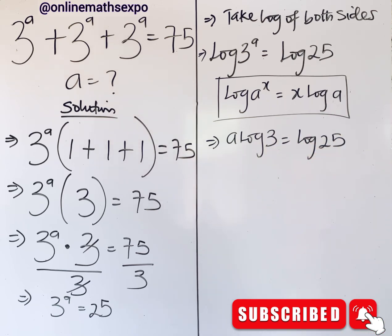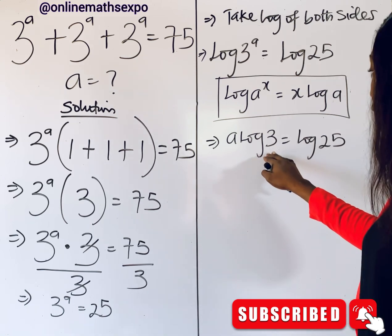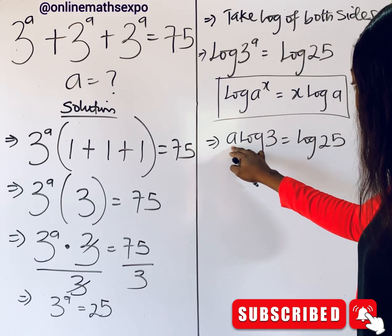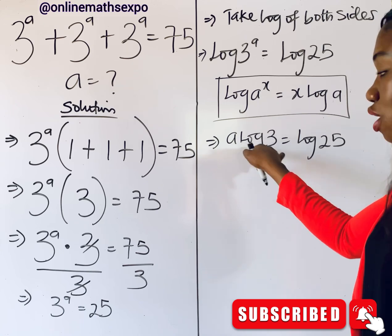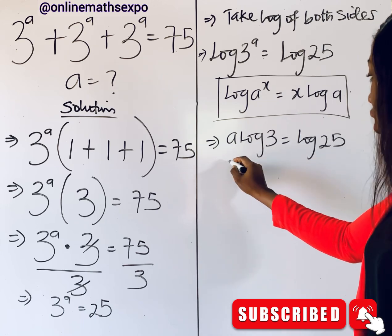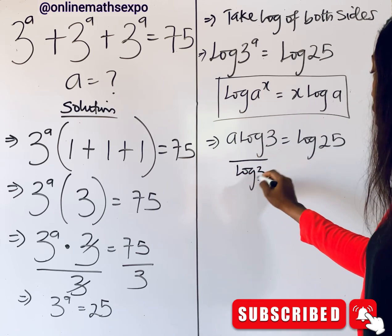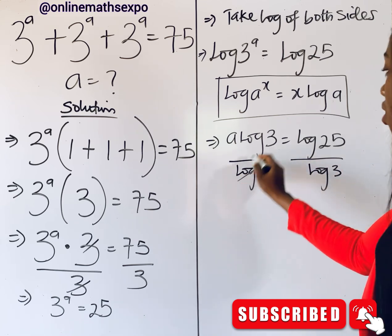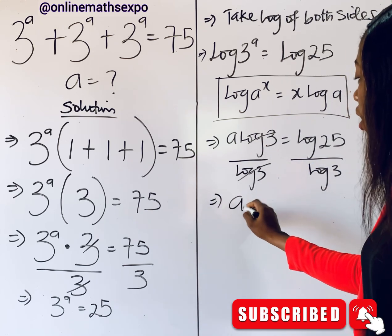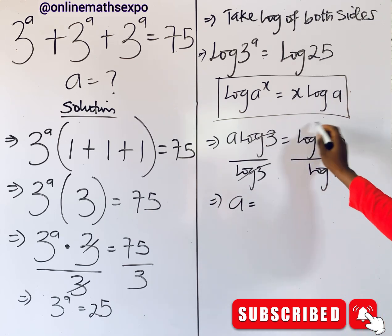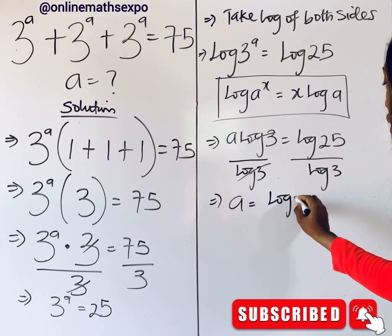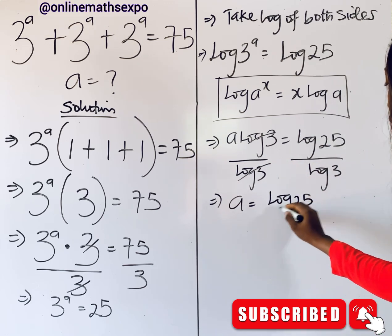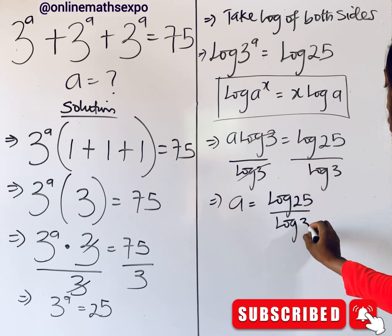Now we keep simplifying. To isolate a, remember that log(3) is multiplying, so we divide both sides by log(3). The log(3) cancels out, and we have a is equal to log(25) divided by log(3).